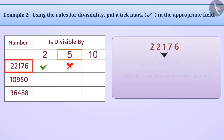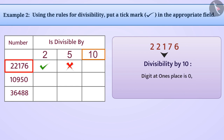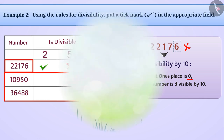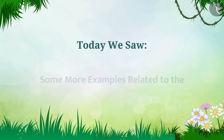For divisibility by ten, the rule tells us that if the digit at the ones place is 0, then the number is divisible by ten. Here the digit at the ones place is not zero, so this number is not divisible by ten. Now complete the table for the other numbers given.